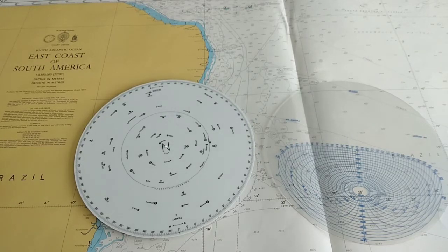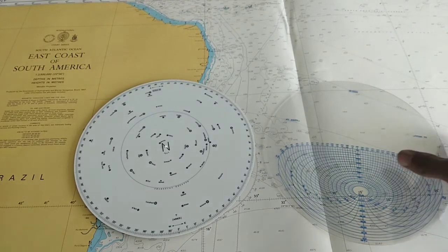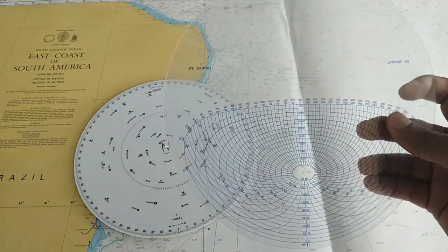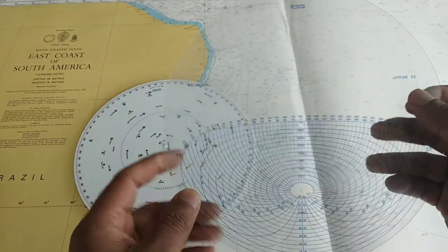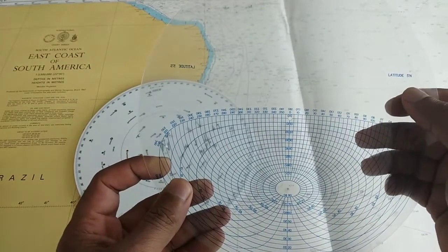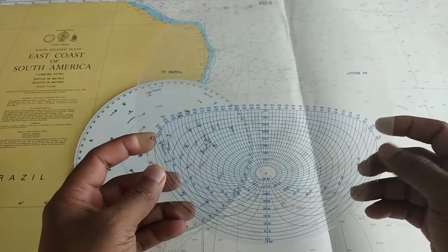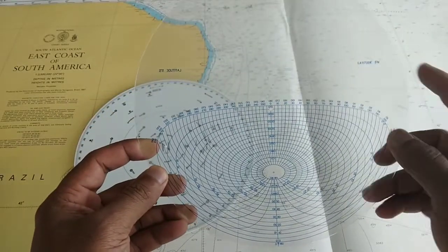So for example, let's say now I am on latitude north 5. So I choose the latitude north 5 template. This side is north 5; if I turn, this side is south 5.